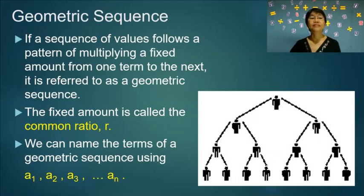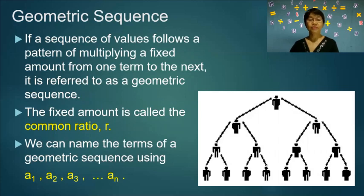Geometric sequence. If a sequence of values follows a pattern of multiplying by a fixed amount from one term to the next, it is referred to as a geometric sequence. The fixed amount is called the common ratio, r. We name the terms using a₁, a₂, a₃, and so on.